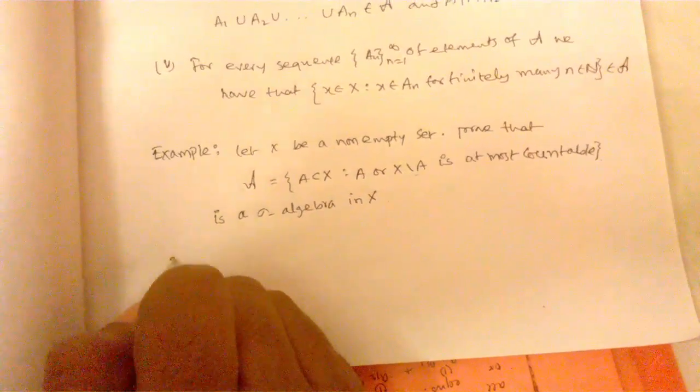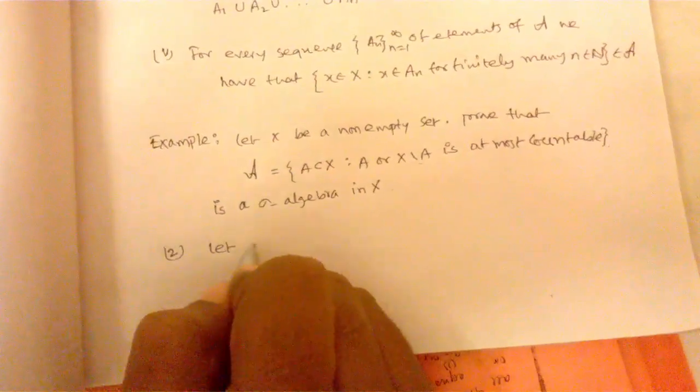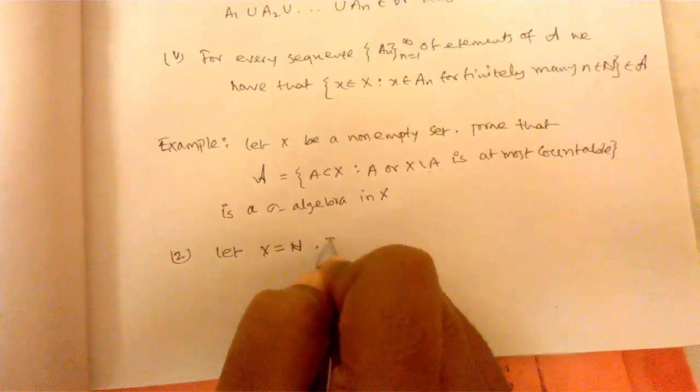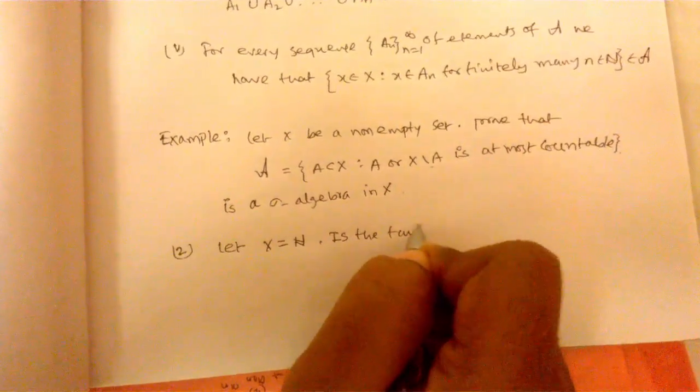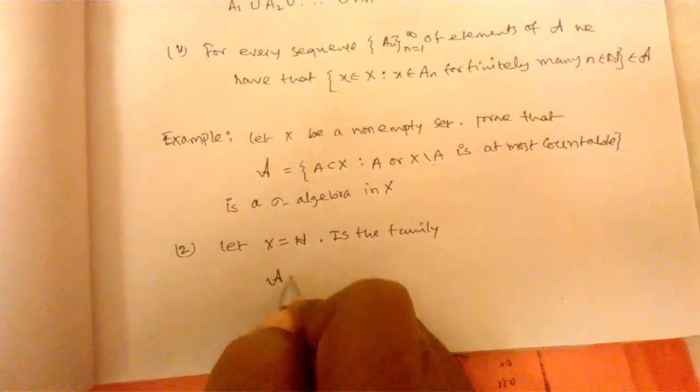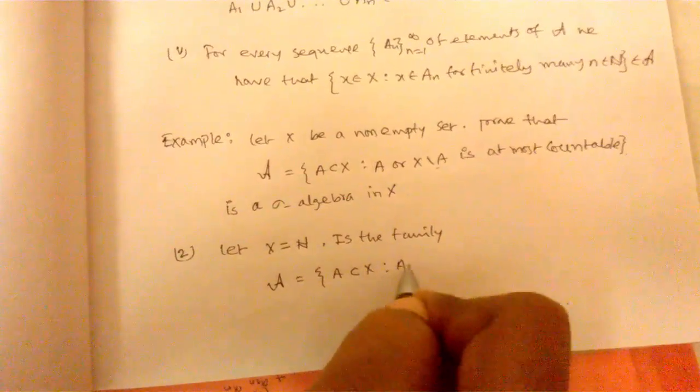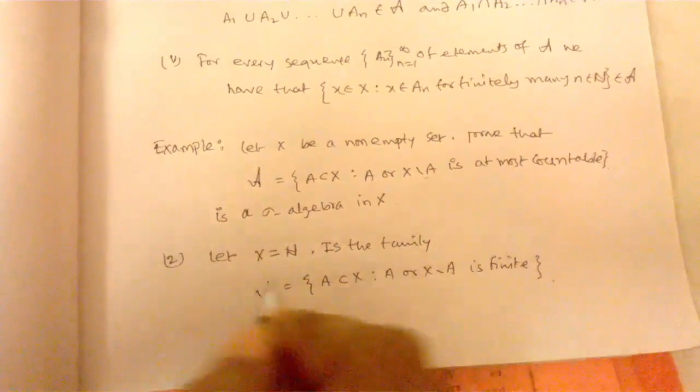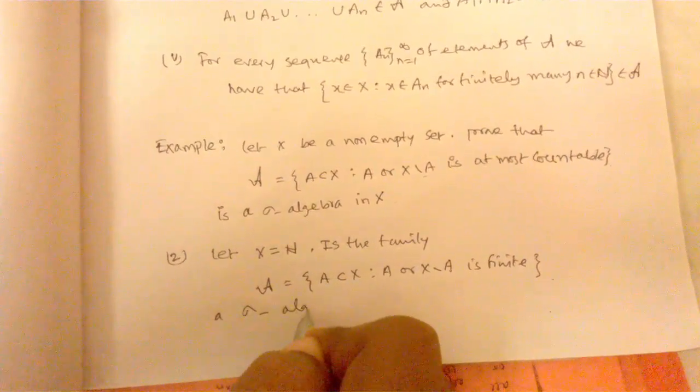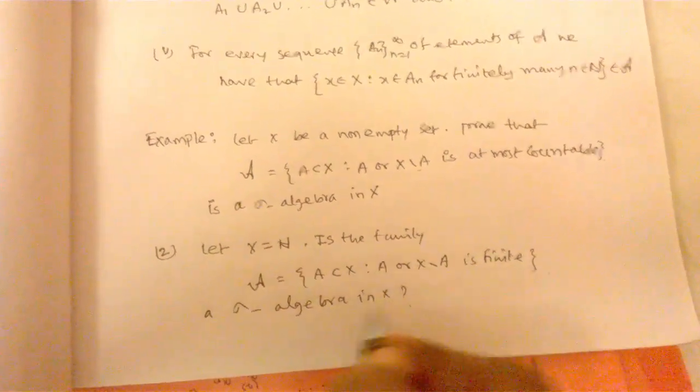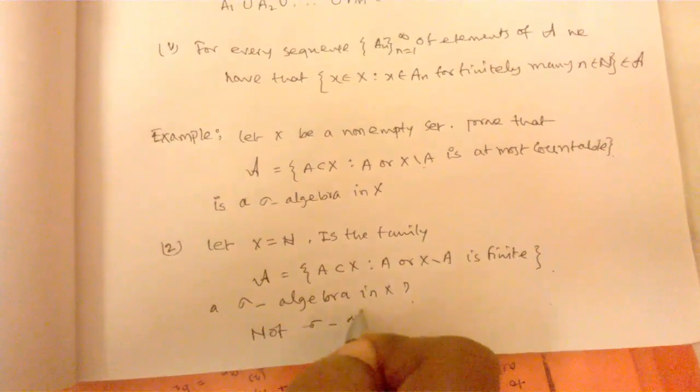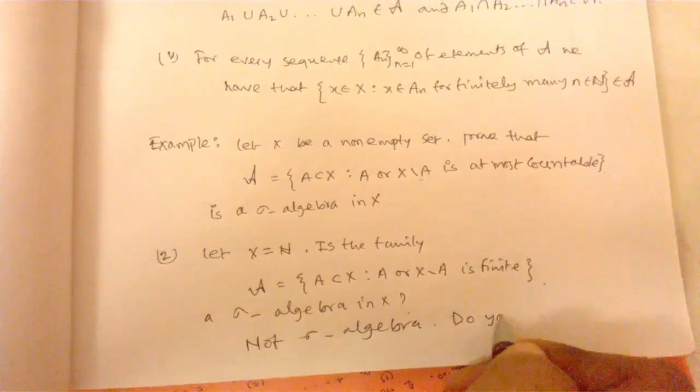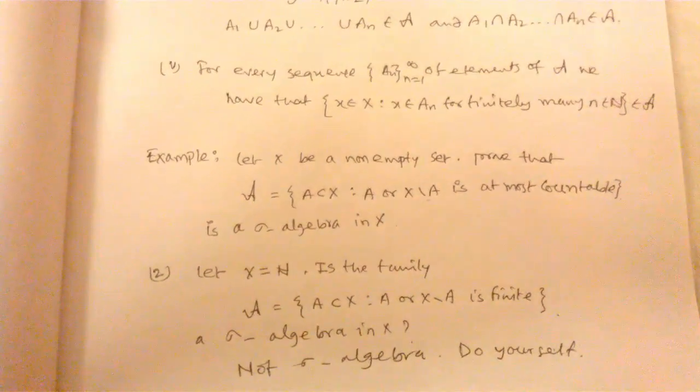Another example which is not a sigma algebra. Example: let X equals N, the set of natural numbers. The family A equals {subsets of X such that A or X minus A is finite}. Is A a sigma algebra in X? Not a sigma algebra. It fails property 3.